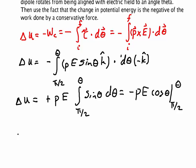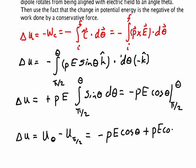So the change in our potential energy, which is our potential energy minus our potential energy when we're at pi over 2, is equal to minus the dipole moment times the electric field times cosine theta, minus a minus makes a plus, the dipole moment times the electric field times the cosine of pi over two. But we know that the cosine of pi over two is zero.